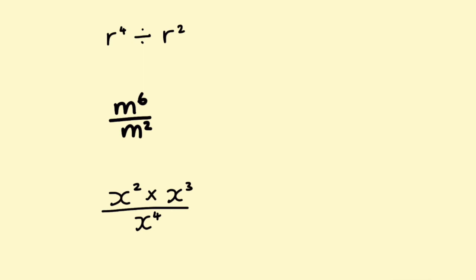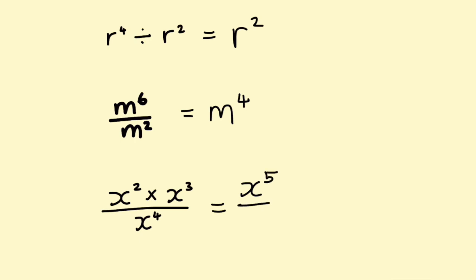Let's have a look at some simplifying divisions. Remember the rule: when you divide, you subtract the index numbers. So r to the power of 4 divided by r squared is 4 take 2, giving r squared. The next one: m to the power of 6 divided by m squared — 6 take 2. It's as simple as that; as long as you can remember the index laws, it's as simple as addition and subtraction. The last one has a multiplication on the top line, so you do that first and then the division. x squared times x to the power of 3 — add those exponents (by the way, an exponent is another name for an index number) — giving x to the power of 5 over x to the power of 4. Then subtract: x to the power of 1, which we just write as x.